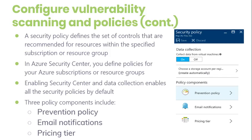To modify a security policy at the subscription level or resource group level, you need to be an owner or contributor for that subscription. At the subscription level, you have two configuration items. The first is data collection: set this to on or off for the VMs in the subscription. Data collection includes daily scanning of all supported VMs for security monitoring and recommendations, as well as the creation of security events for analysis and threat protection. Storage account: set this to specify where to store the security data. If you don't choose a storage account for each region, one will be created for you. For security reasons, the data collected is logically isolated from other customer data.